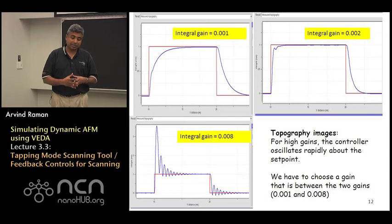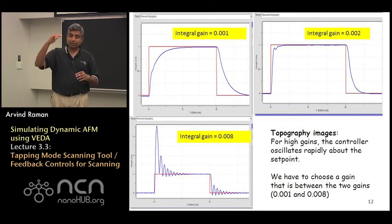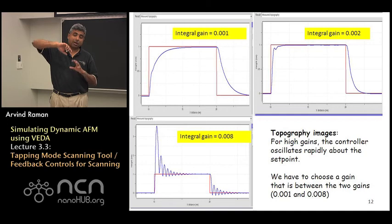This was discussed in the contact mode imaging as well. What is happening is that basically the Z controller is overreacting to the changed error signal. So when it first approaches the step the amplitude decreases.